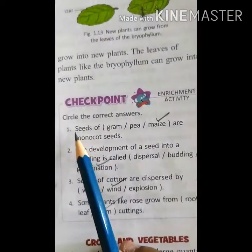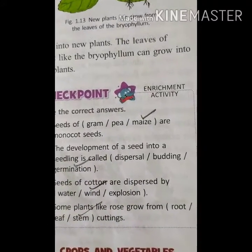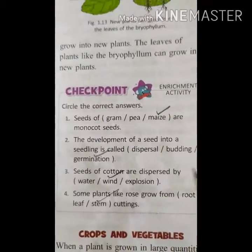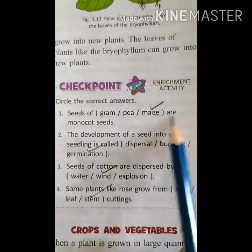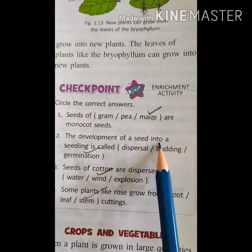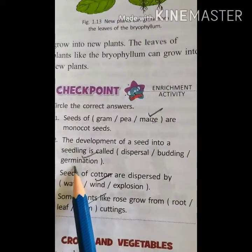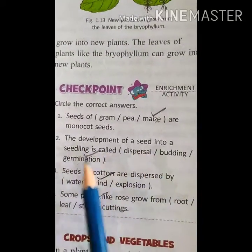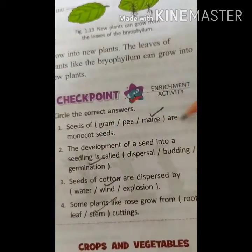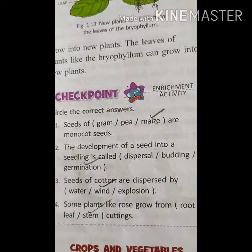Now for the checkpoint - circle the correct answers. Seeds of gram and pea are dicots because they have two cotyledons, whereas maize seeds are monocots with a single grain. The development of a seed into a seedling is called germination. If asked in an exam, write: 'the development of a seed into a seedling is called germination.'